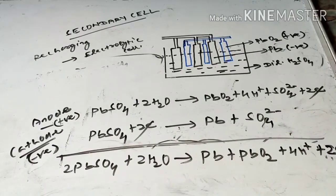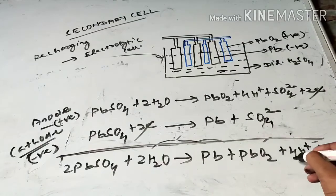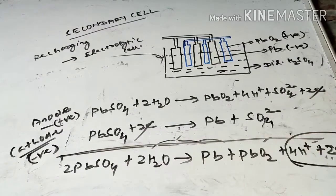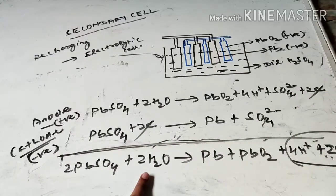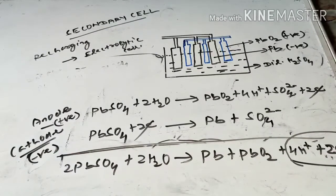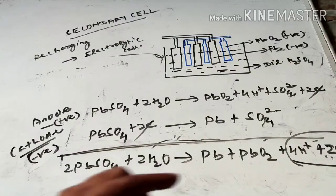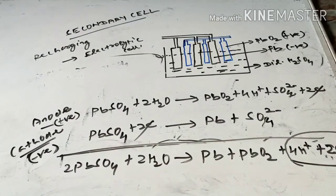So during recharging, lead sulfate reacts with water to give lead and lead dioxide with release of sulfuric acid. This indicates that water helps to produce H⁺ and SO₄²⁻, meaning the sulfuric acid density increases. Due to this reason, when water is added and electrolysis occurs, it helps recharge the cell, which is acting as an electrolytic cell.